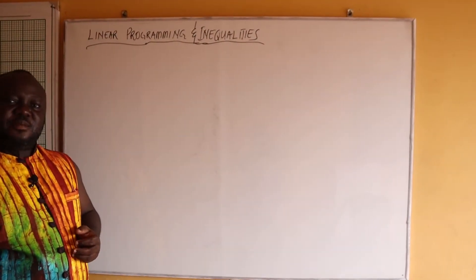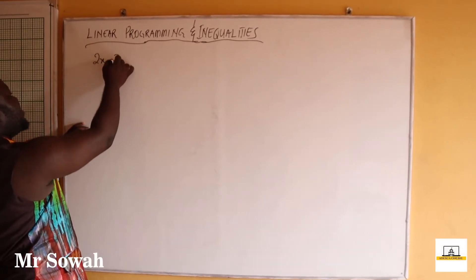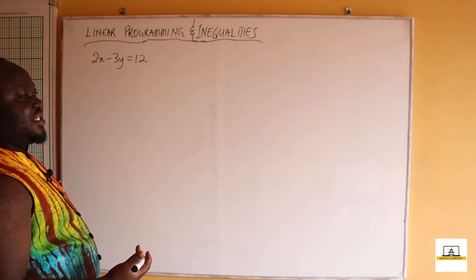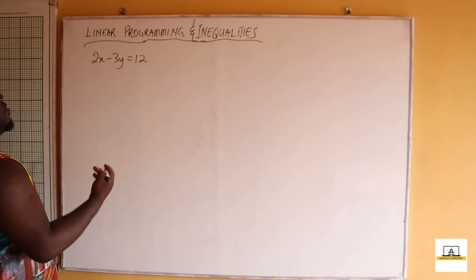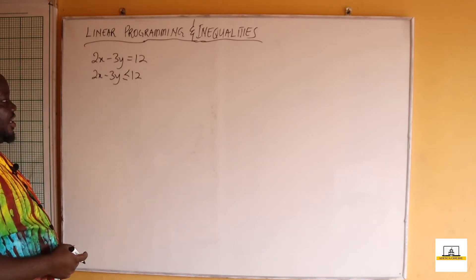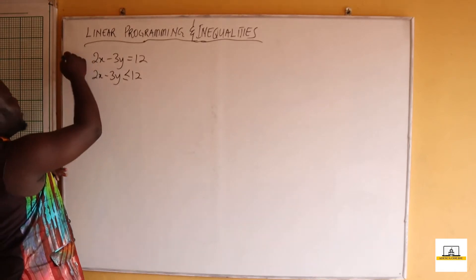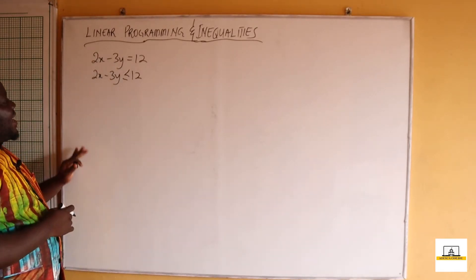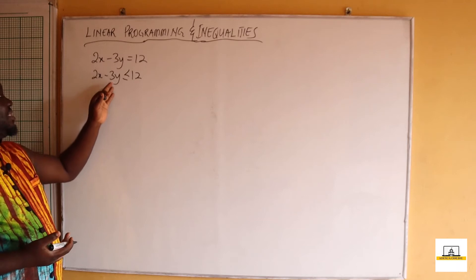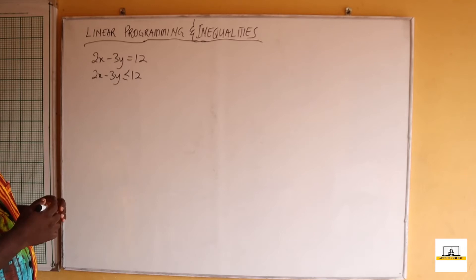In our second scenario, we are asked to draw the line 2x minus 3y equals 12. In the second question, we are asked to indicate why 2x minus 3y is less than or equal to 12 will lie. So we have two scenarios: the first is to draw the line 2x minus 3y equals 12, and the second is to indicate by shading where 2x minus 3y less than or equal to 12 will lie.